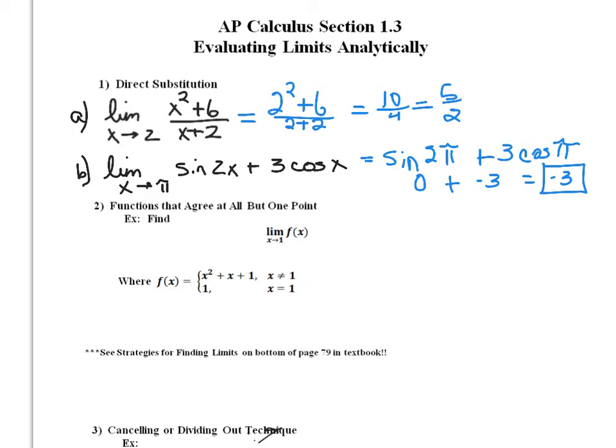Sometimes we're going to look at functions that agree at all but one point. Here's an example of a piecewise function. I'd like to start with a graph of this function and see what happens when I graph it. The equation is: f of x equals x squared plus x plus 1 as long as x does not equal 1, and f of x equals 1 when x equals 1. So take a few minutes, pause the video, and fill out the table of values especially looking around the number 1.